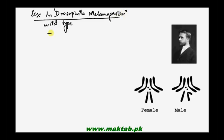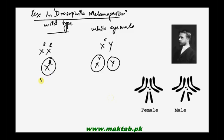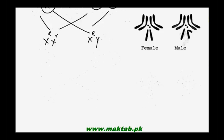In Drosophila, there was a wild type female with both X chromosomes carrying the wild type allele (capital R), and we had a white-eye male which is hemizygous — carrying small r on its X chromosome and a Y chromosome. We performed a cross between them and looked at the gametes produced: X capital R and X small r from the female, and X capital R and Y from the male.